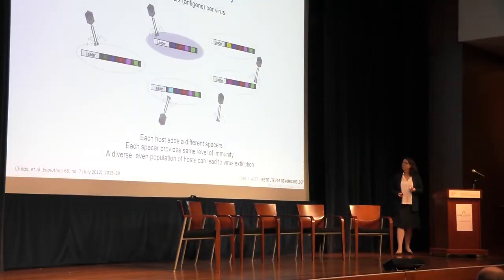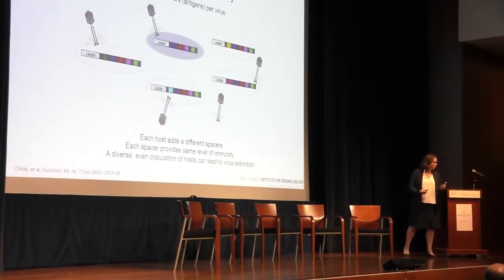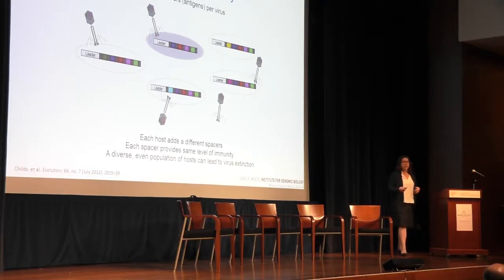We thought about how that might change the evolutionary process, and we put together a model we call distributed immunity. Every host cell in a population that's being infected by a virus can take a new spacer into its genome. Each cell has gotten a new spacer at the beginning of its spacer array. So they all have immunity to the same virus, but in different ways — they have different genotypes with the same phenotype.